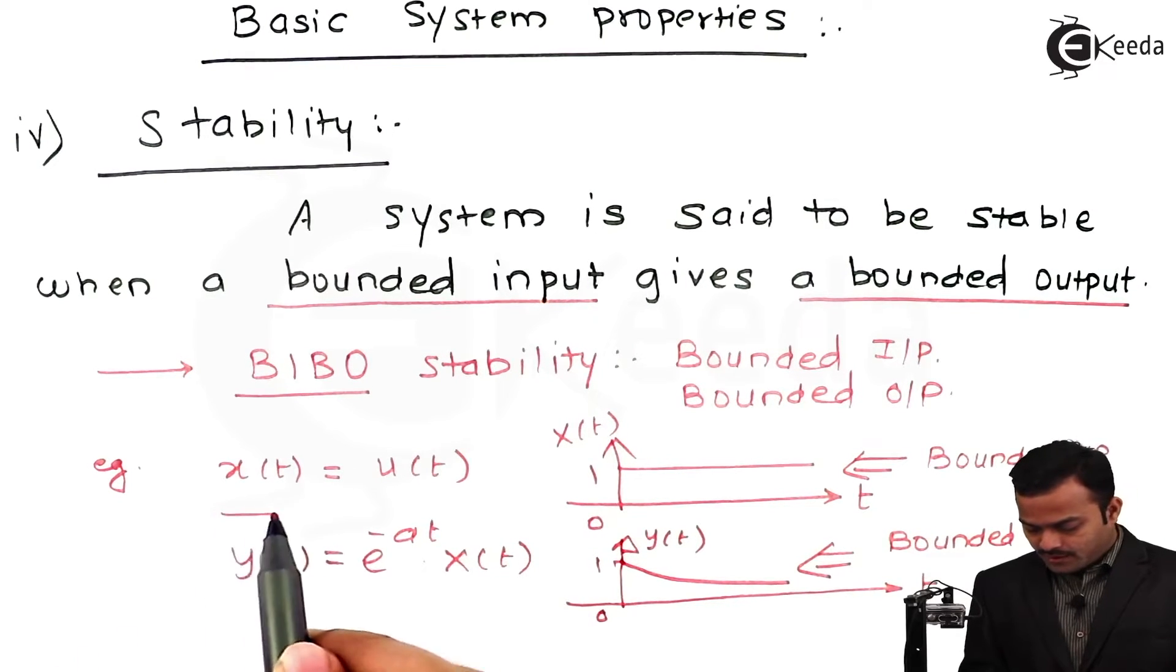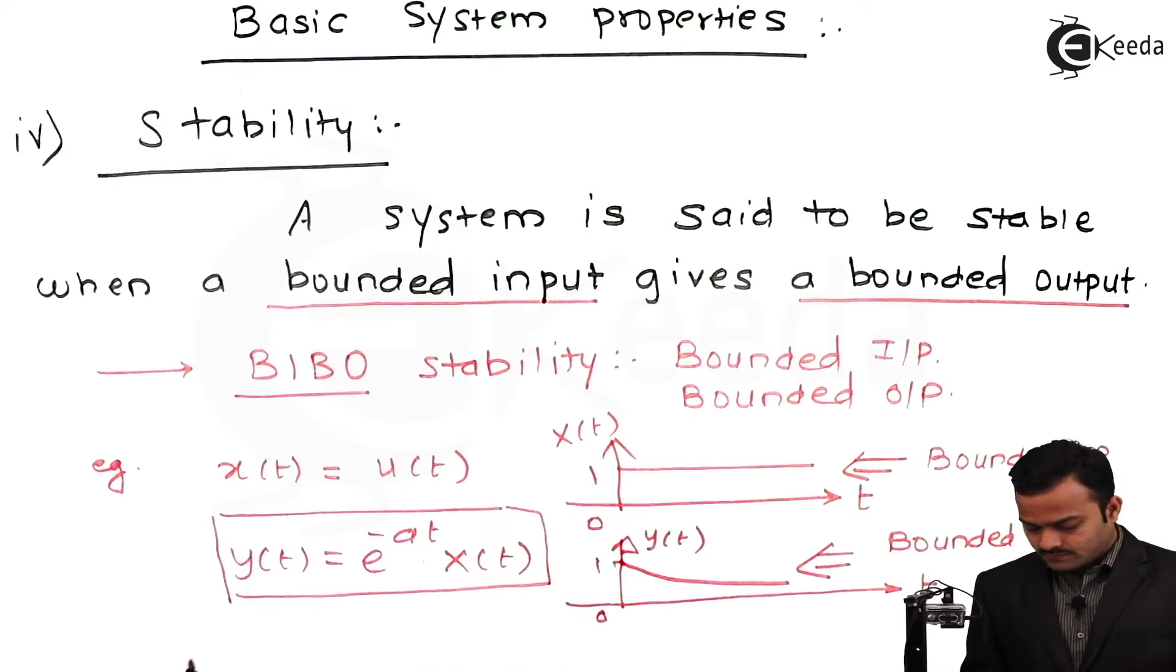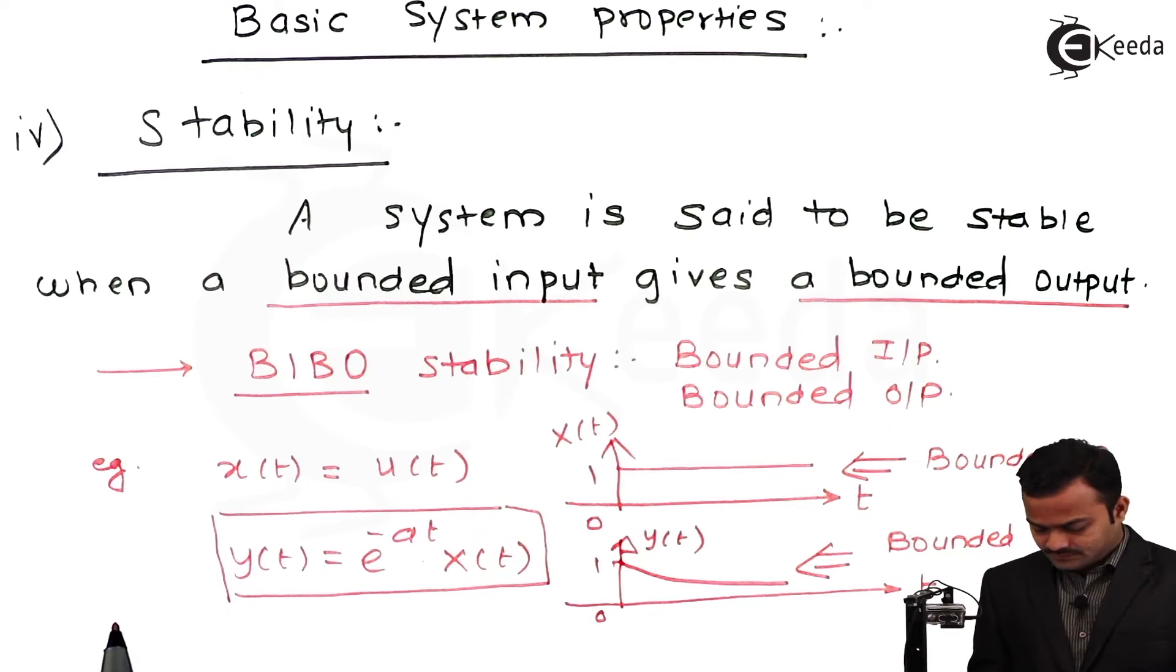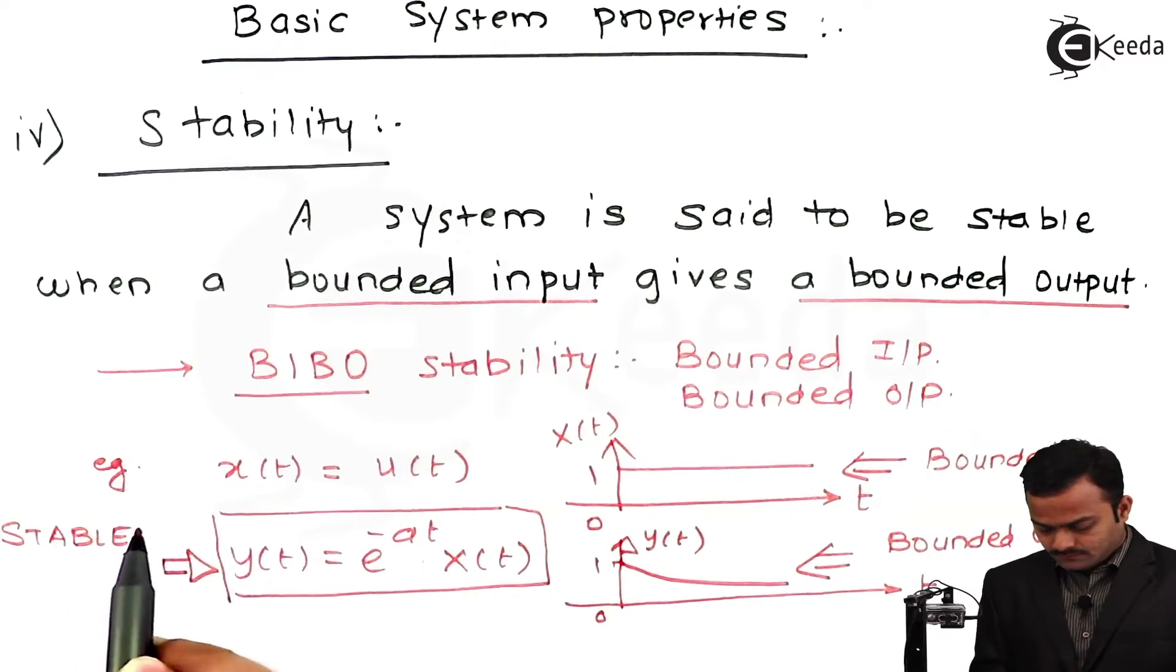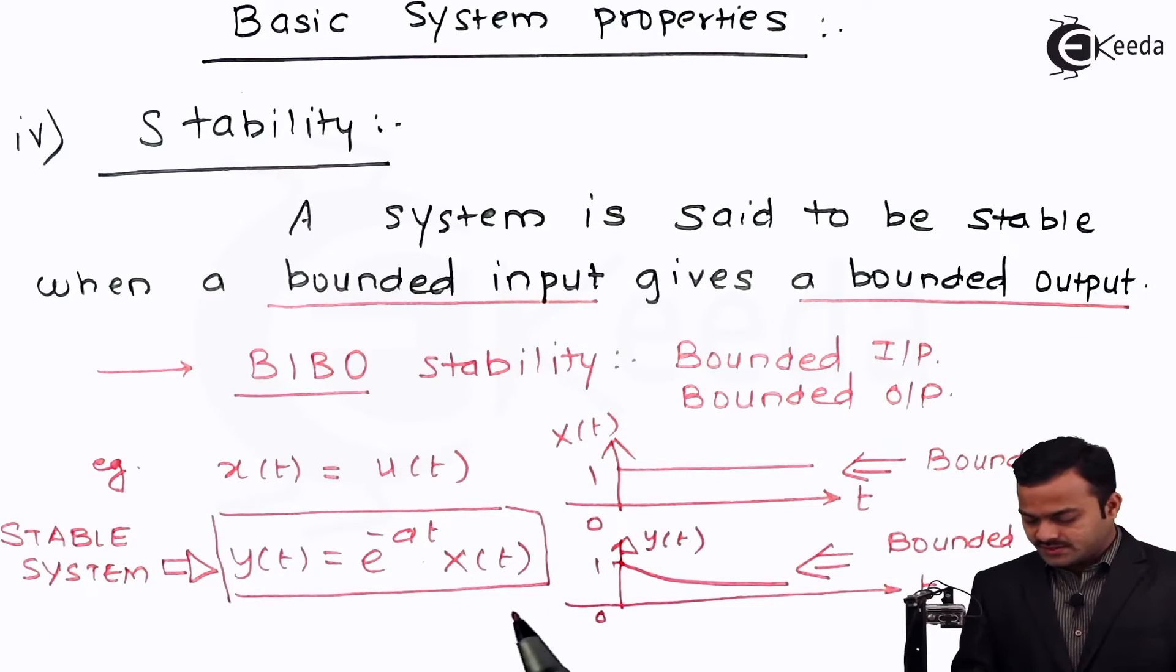The system represented by y(t) = e^(-at) x(t) will be a stable system. Let's take an example of an unstable system. I will call this a stable system because the magnitude of output of the system is converging, it is becoming finite. It is not increasing with t.